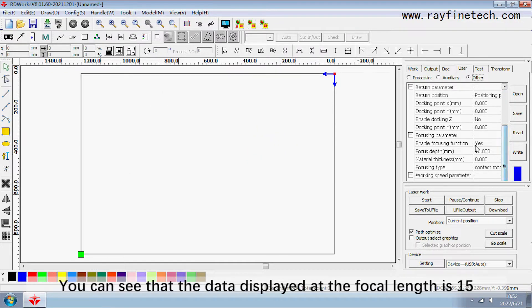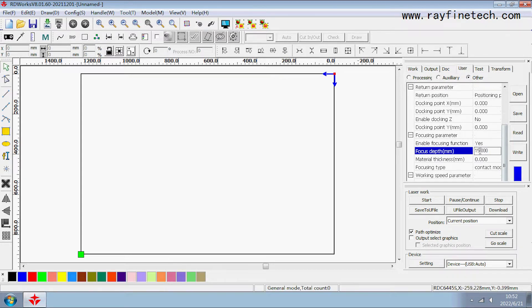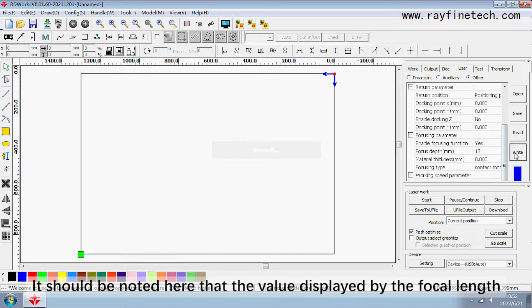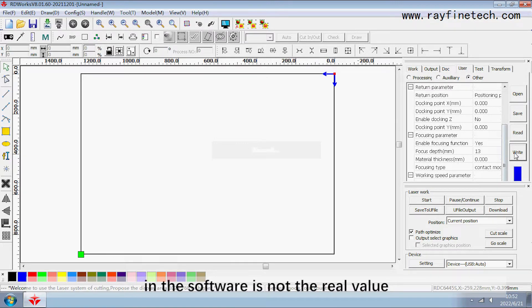You can see that the data displayed at the focal length is shifting. We change it to 13, then write. It should be noted here that the value displayed by the focal length in the software is not a real value.